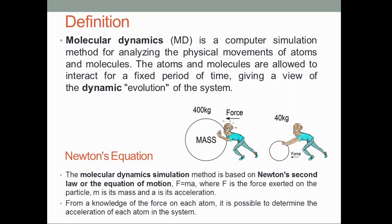The atoms and molecules interact for a fixed period of time — this can be particular nanoseconds or seconds. This evolution is called dynamic evolution. The movement refers to how these atoms or molecules move when they interact with different liquid molecules or with lipid bilayer molecules as they pass through the cell membrane.